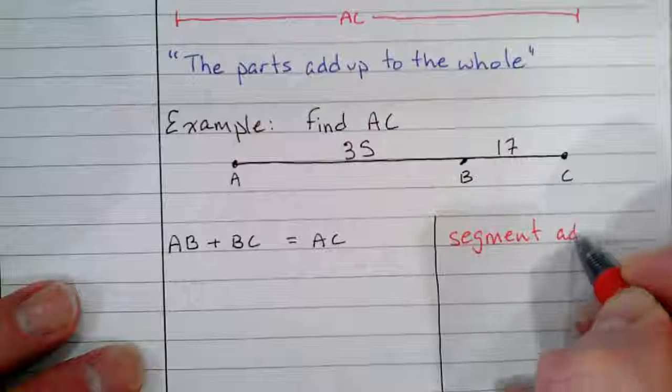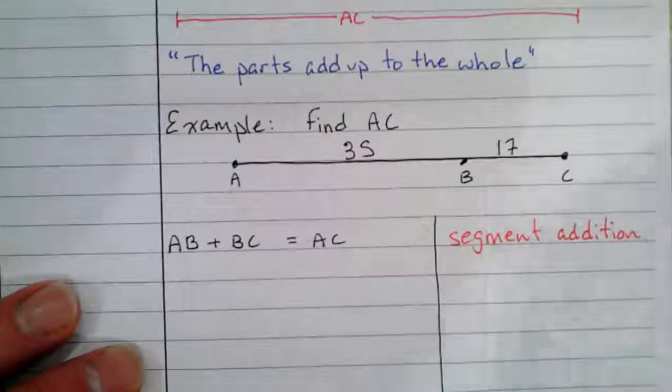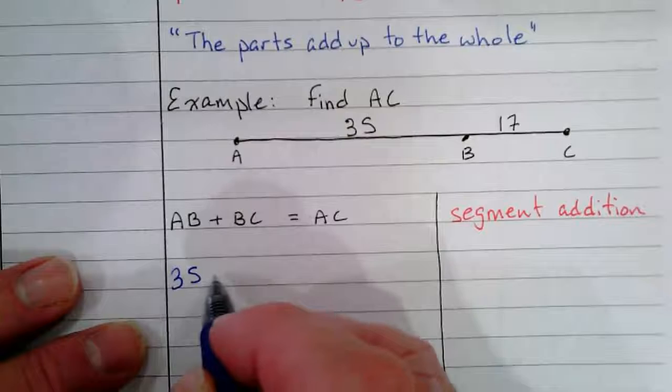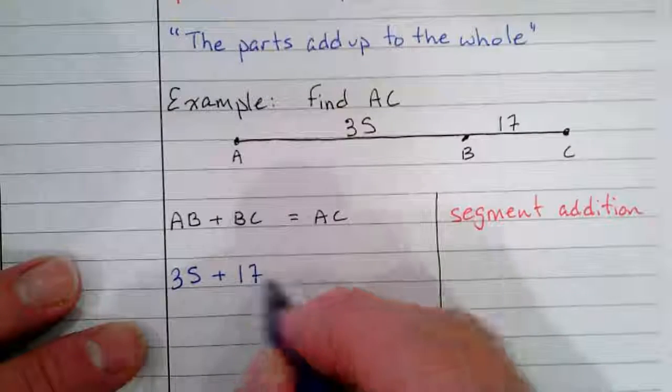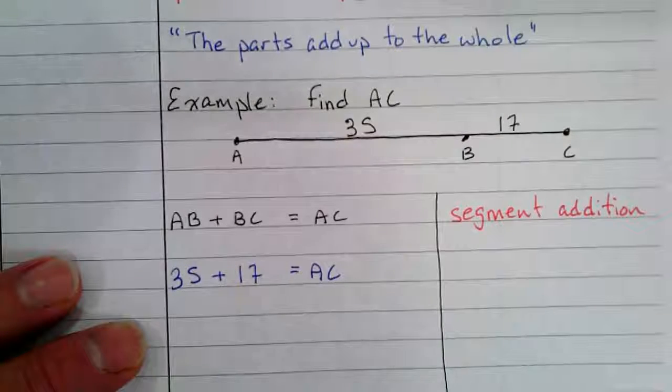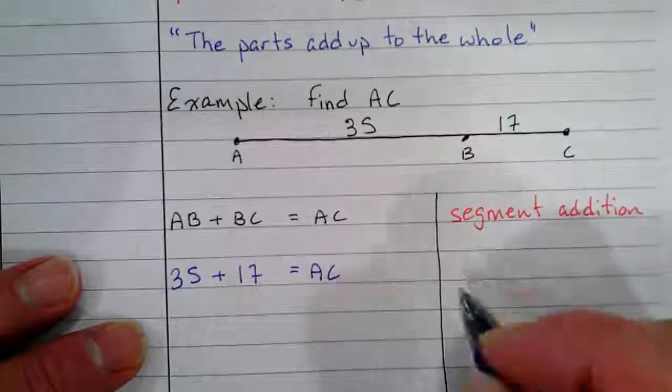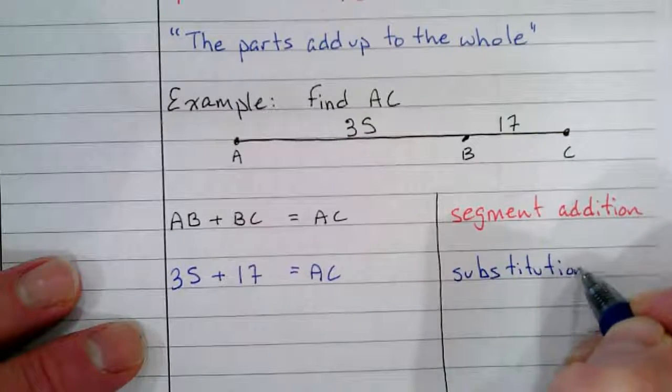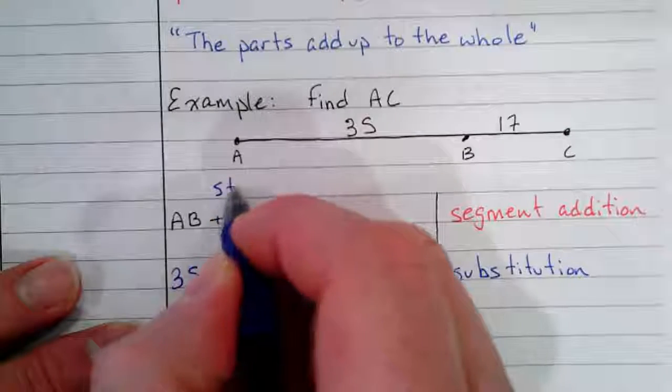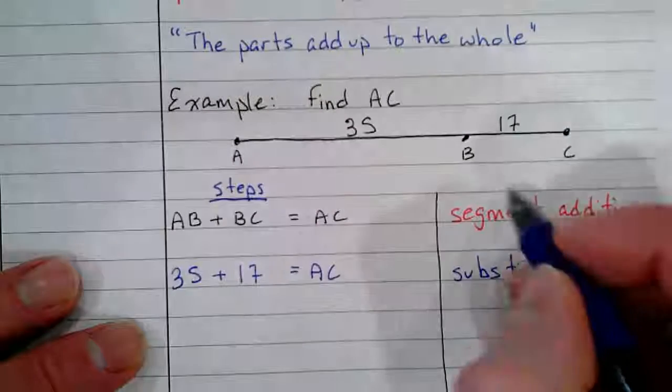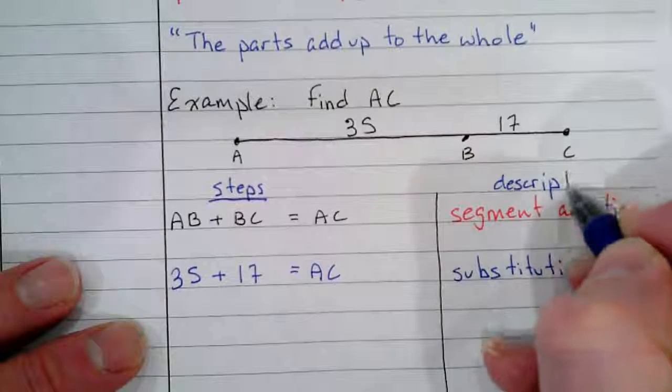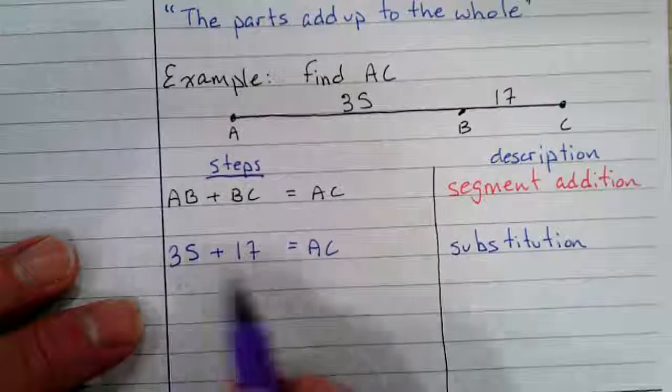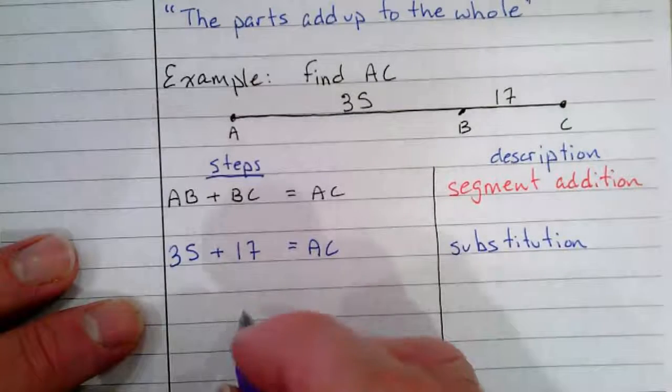So we're going to start out with AB plus BC equals AC, and that is the segment addition postulate. Now we're going to replace AB with 35, we're going to replace BC with 17. We just said that's basically substitution. I guess we could see these are steps and descriptions.